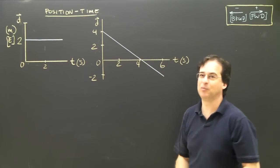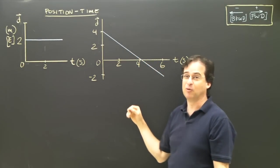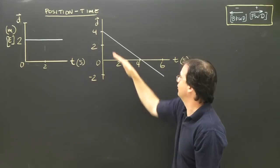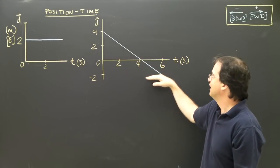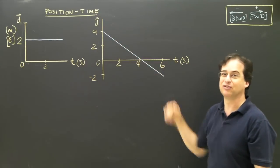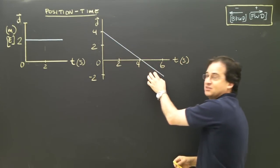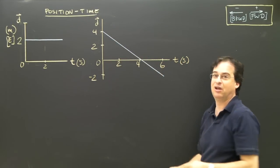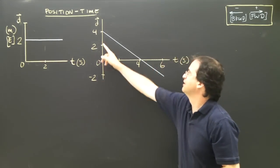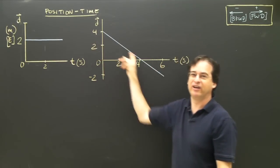Let's look at a slightly more complicated graph. In this one, I've got a line sloping down, which means the slope is going to be negative. The slope here is negative, and even though this part is below the axis, the amount of the slope is still the same — it's one continuous line. So first, what type of graph is it? It's a position-time graph, which tells you where you are at any given time.